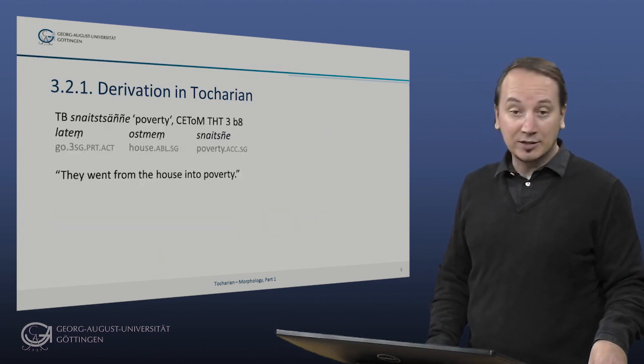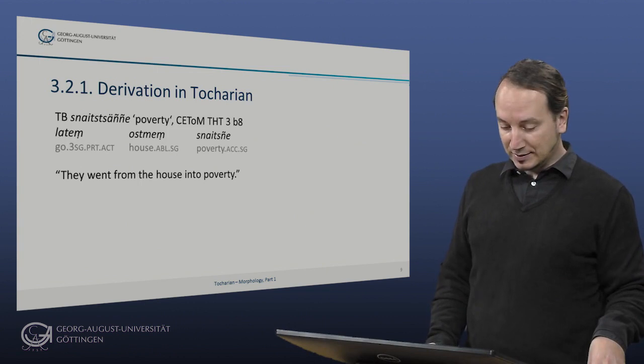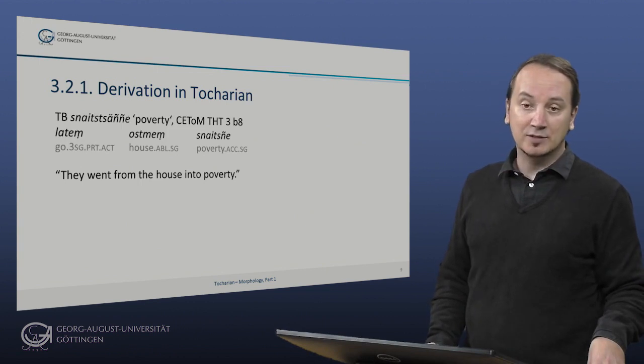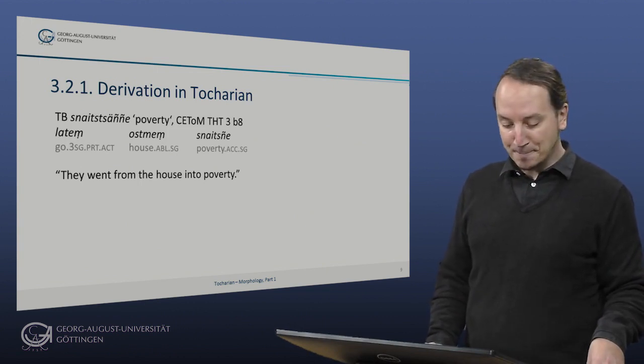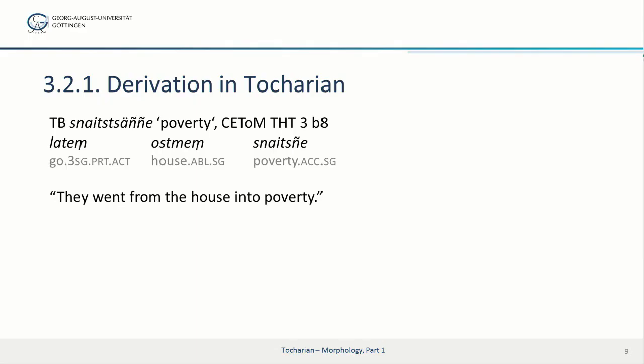Turning to the next example, again from the Udana Lankara: 'latten, ostmen, sneitze' — 'they went from the house into poverty.' Here we can see that the adjective 'sneitze' meaning poor served as the derivational base for 'sneitzne', which is just a variant of 'sneitzünje', meaning poverty.